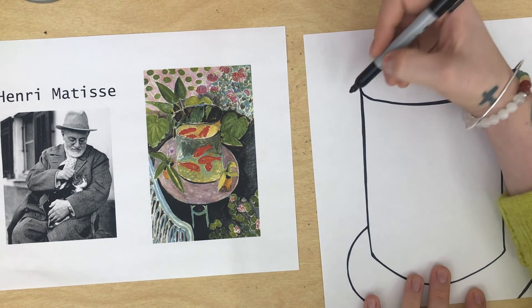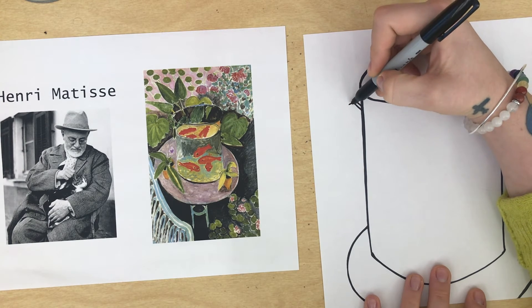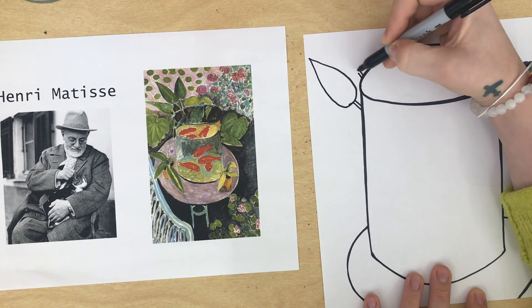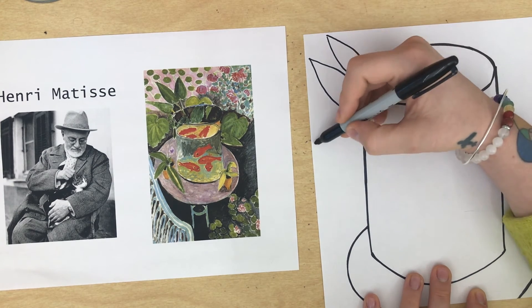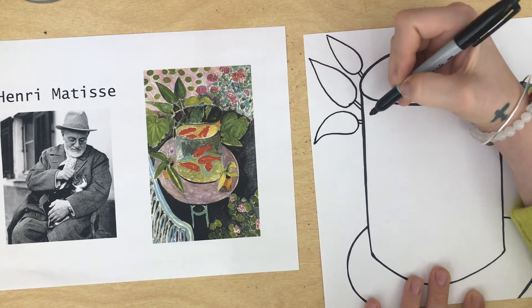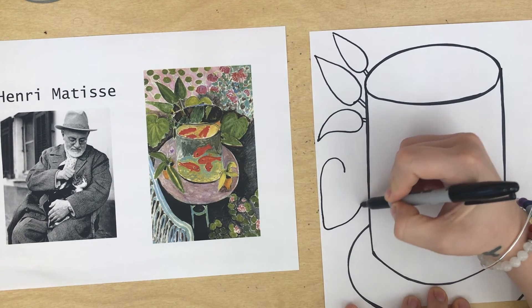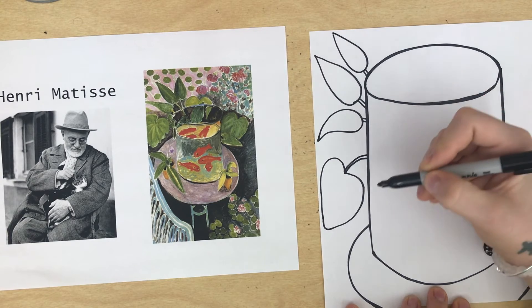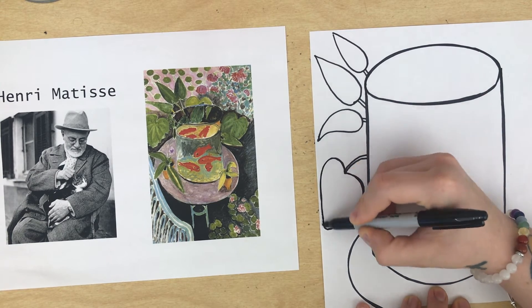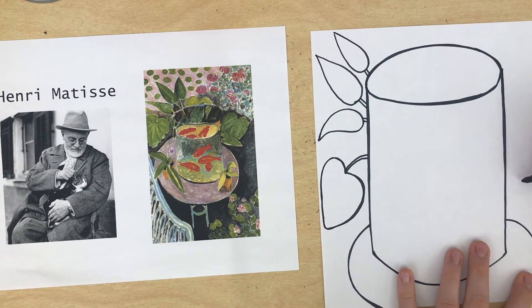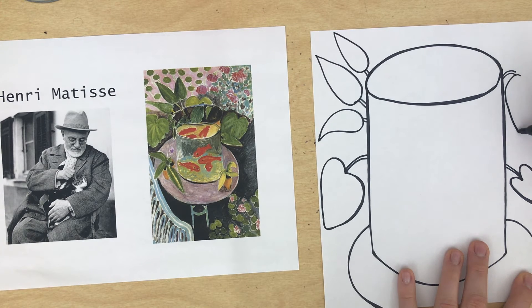Now, besides the cylinder and the fish and the table, there are lots of leaves and plants around his fish cylinder, so I'm going to add some leaves everywhere. Do you have to copy Miss Decora? No — you can make up your own leaves, or maybe you want flowers instead, or something completely different in the background. I'm making little shapes all the way around. This one looks like a heart; the others look like teardrops or raindrops. You do not have to do what Miss Decora is doing. You are the artist.